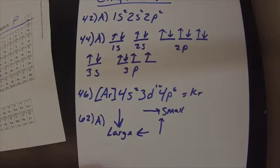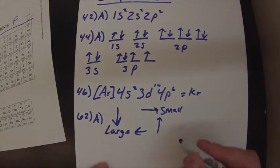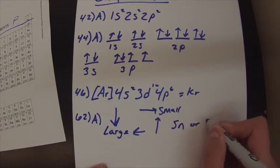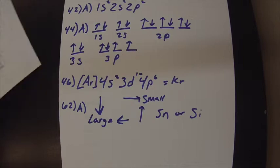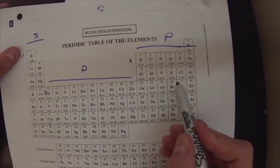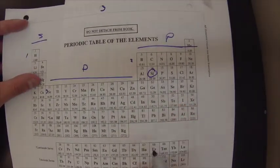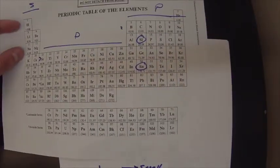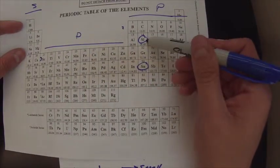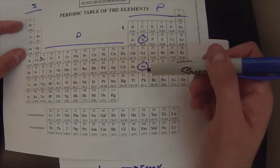So A is asking about tin or silicon. And again, if we look at our periodic table, here's silicon, here's tin. So remember, if you go up it gets smaller, if you go down it gets larger.